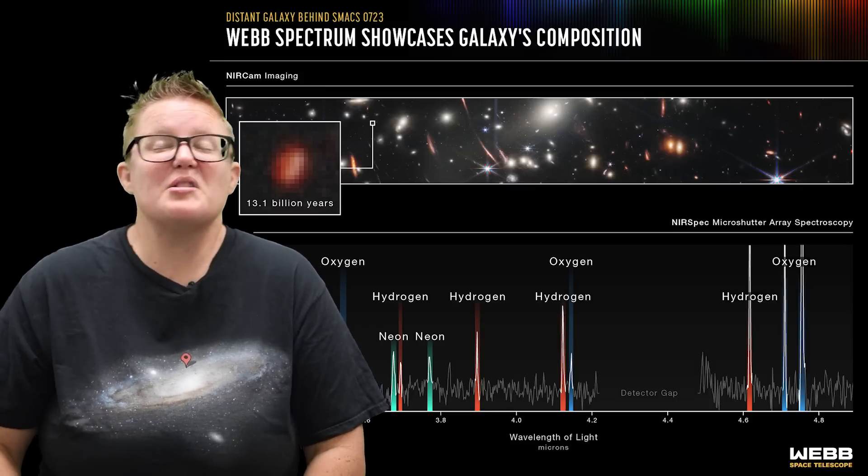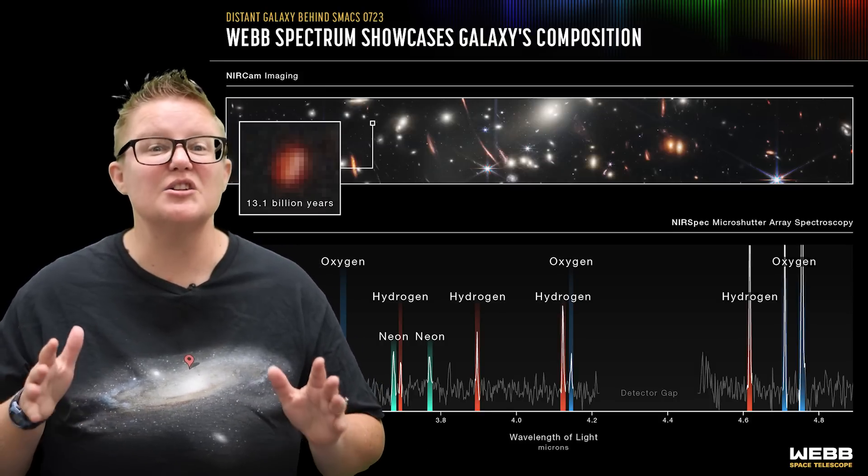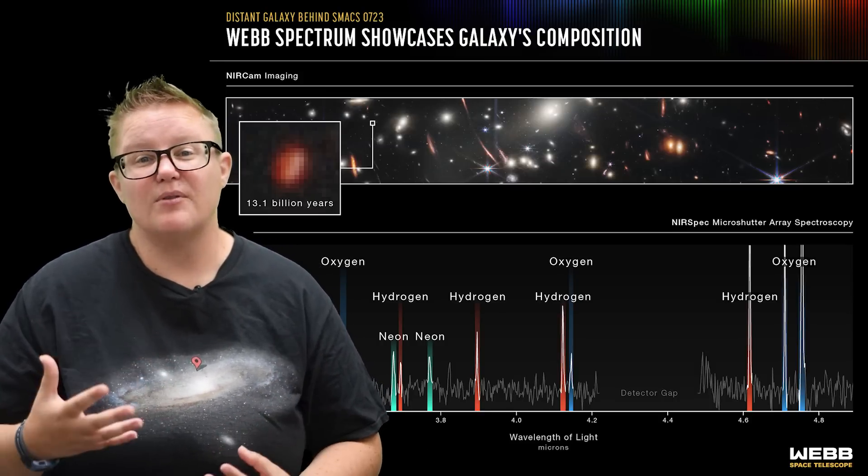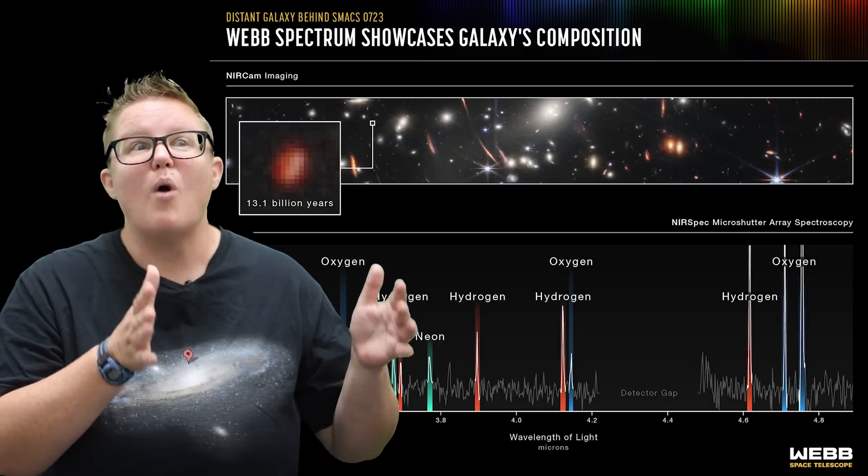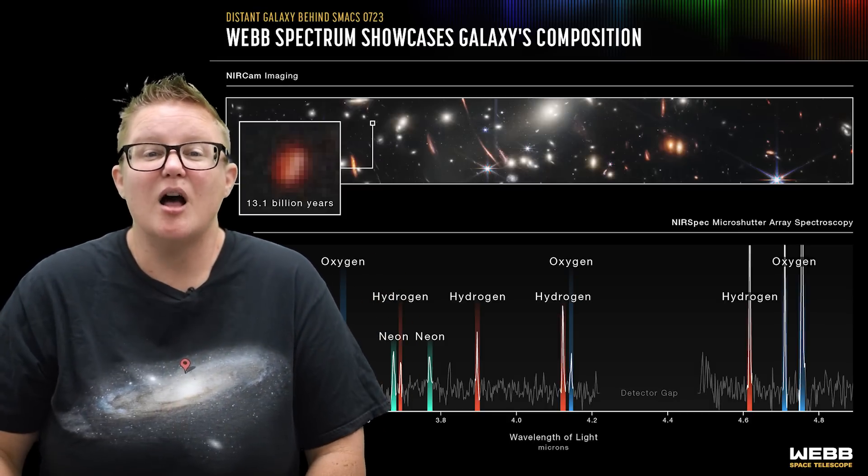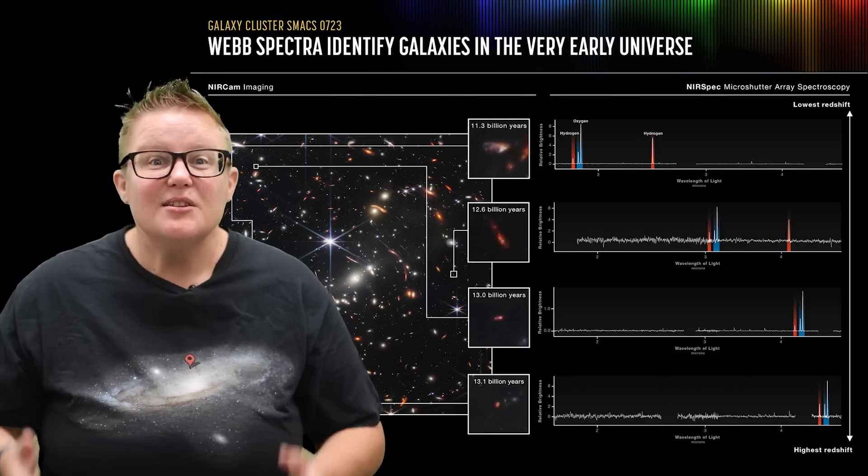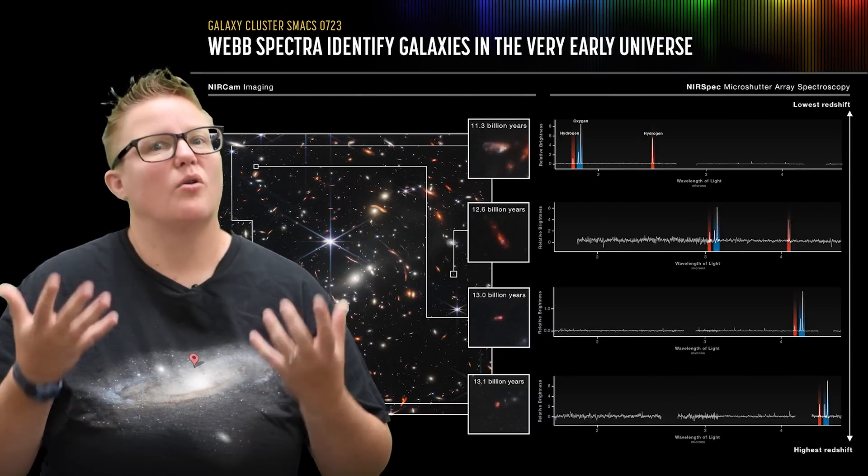What James Webb does better than any telescope we've ever had is it is looking at these infrared wavelengths, and it's looking at a much wider band of infrared than the Hubble Space Telescope can. The reason we want to focus on infrared is because of red shift.